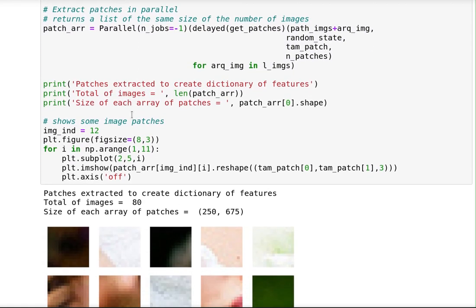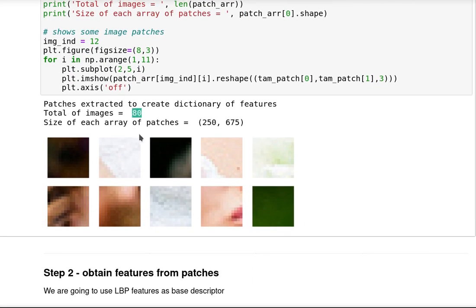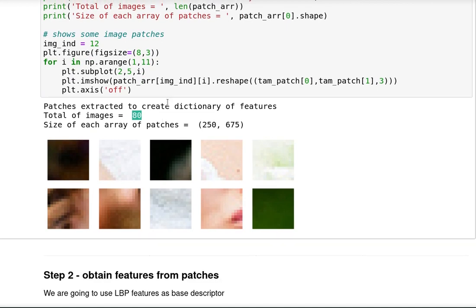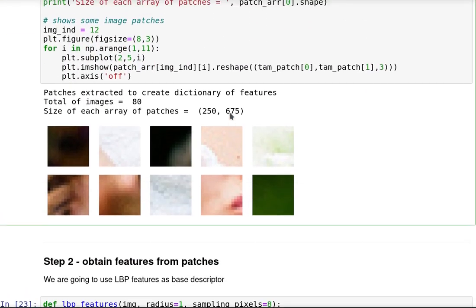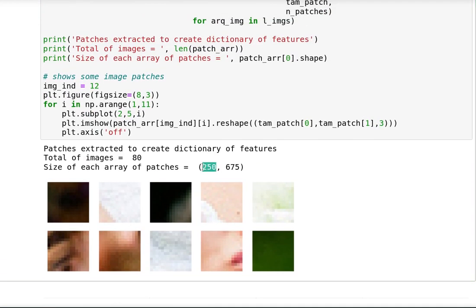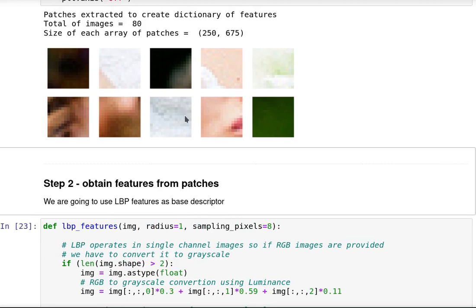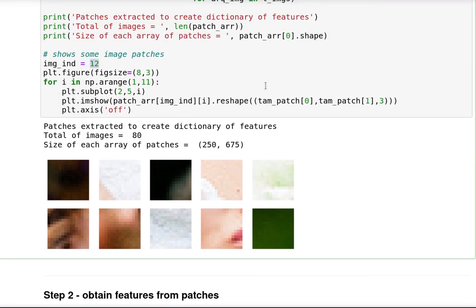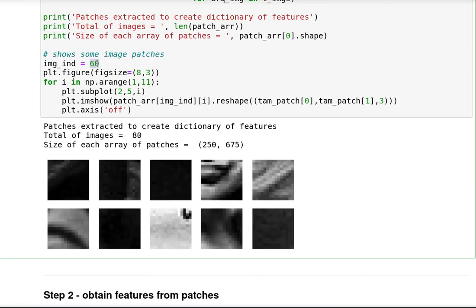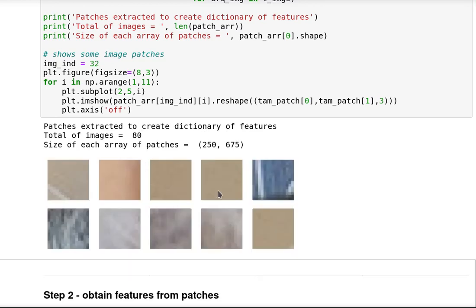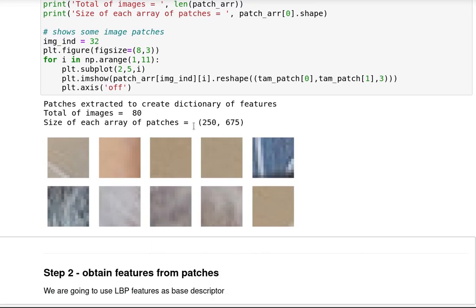I'm going to extract patches from images in parallel to make it faster. We have 80 images in total in this path. The size of each array of patches is 250 because we asked for 250, but the size of each patch is actually 675 because we have 15 by 15 by 3. Next we obtain features from each one of the patches. Those are just a few patches extracted from an image.